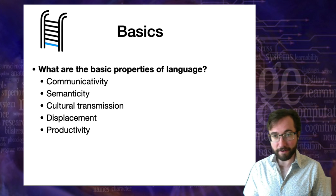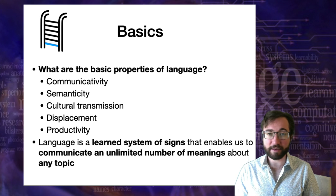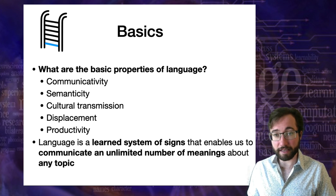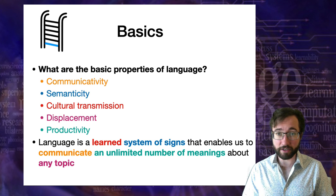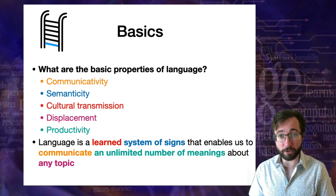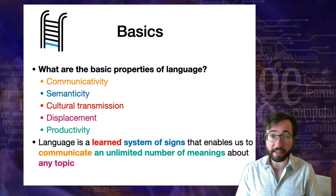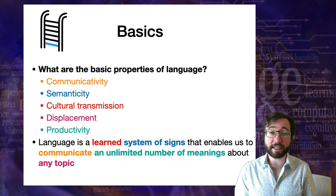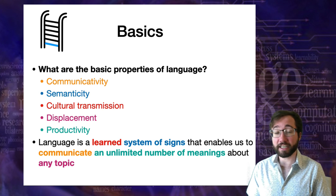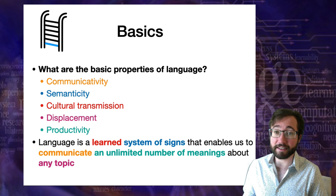We can now synthesize these five properties into a definition: language is a learned system of signs that enables us to communicate an unlimited number of meanings about any topic. Each part maps to a key property: 'learned system of signs' means culturally transmitted pairings of form and meaning; 'enables us to communicate' means we can produce and perceive language; 'unlimited number of meanings' comes from productivity; and 'any topic' — we can even talk about things not physically present — that is displacement.